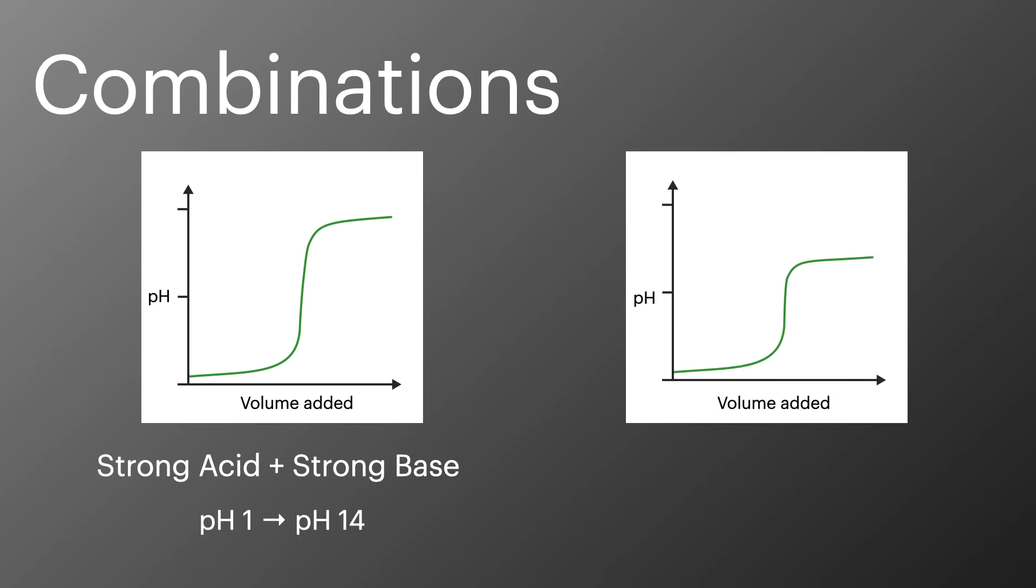In our second example, adding a weak base to a strong acid, the pH again starts lower around 1 and with an excess of base it only goes up as high as around pH 9. The equivalence point is still well defined but the pH might be slightly lower than 7.